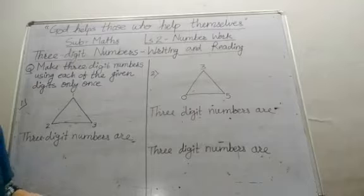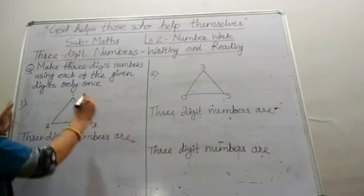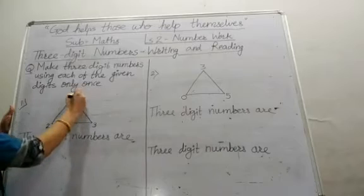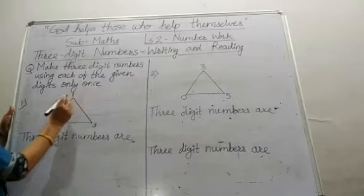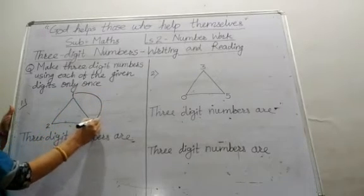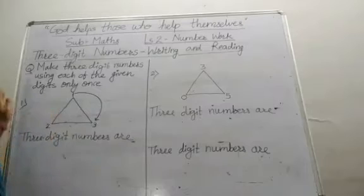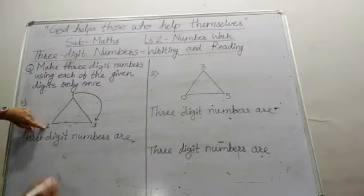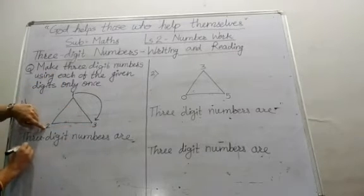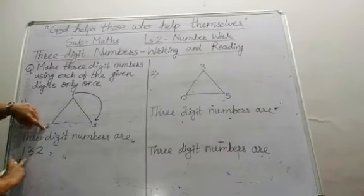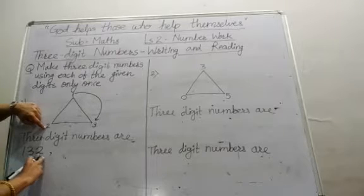For making 3-digit numbers, first we have to move in a clockwise direction. So first we start from 1, and if we move like this, then our number is 1, 3, 2. We get our first 3-digit number: 132.